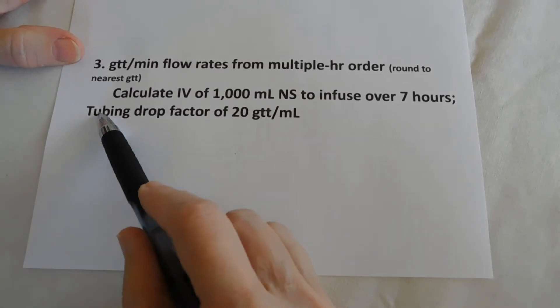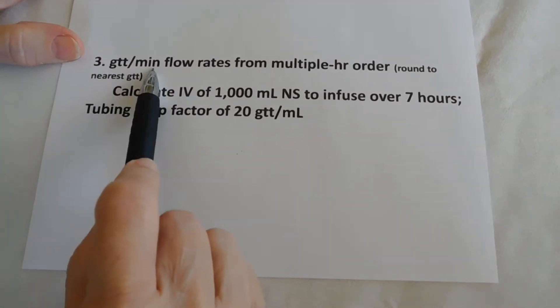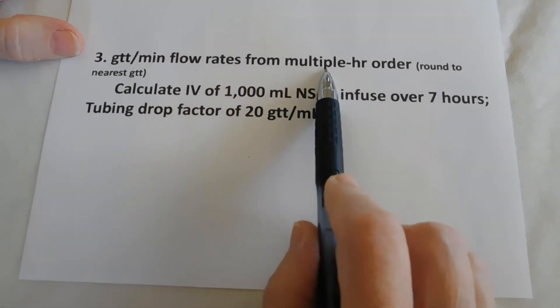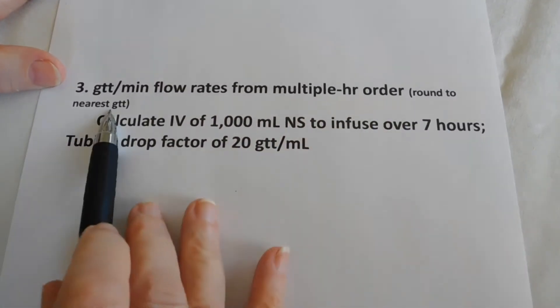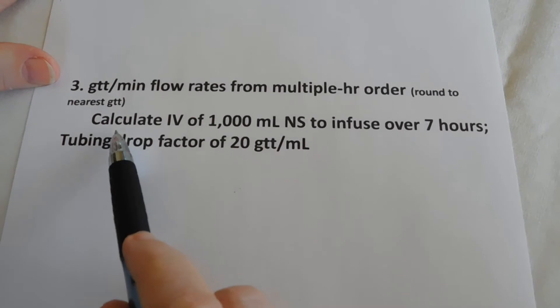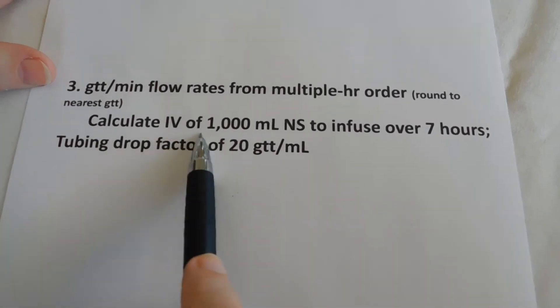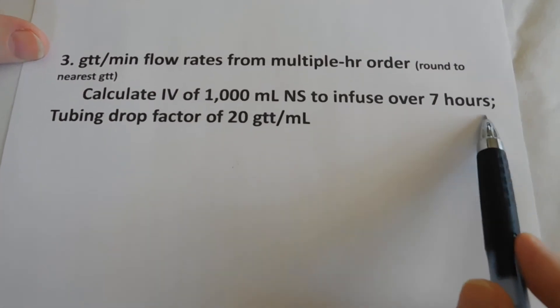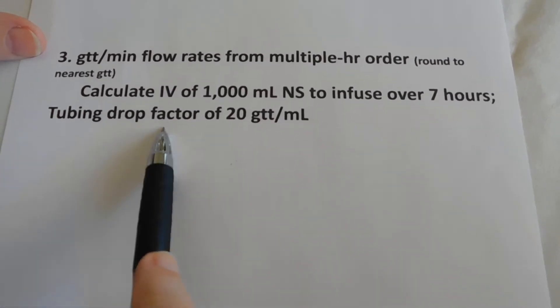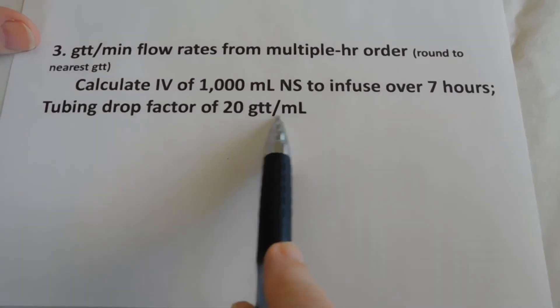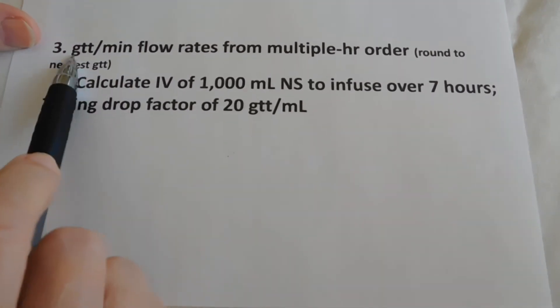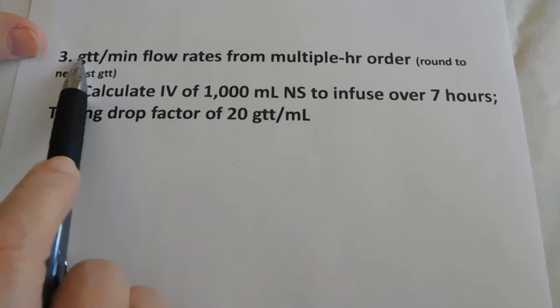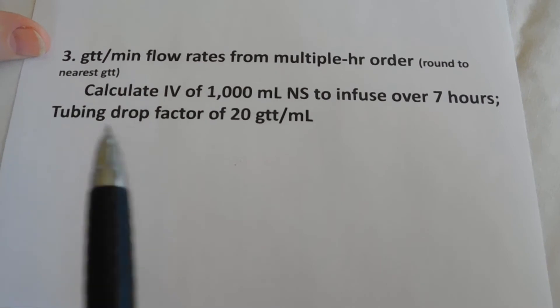So for our third problem, we're using dimensional analysis to calculate drops per minute flow rates from a multiple hour order. We're going to round to the nearest drop. So here's our problem. Calculate an IV of 1,000 milliliters normal saline to infuse over 7 hours. The tubing drop factor is 20 drops per milliliter. And our units of measure is drops per minute.